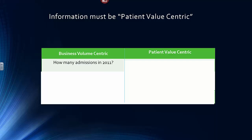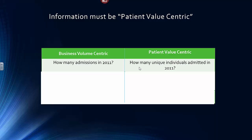Let's talk about information that is patient-value-centric and how it differs from business-volume-centric. A business-volume-centric question is: how many admissions happened in 2011? A value question is: how many unique individuals were admitted? There's a big difference between one patient admitted and readmitted 100 times, and 100 patients who got whatever needed to be done completed in the first admission and did not get readmitted.